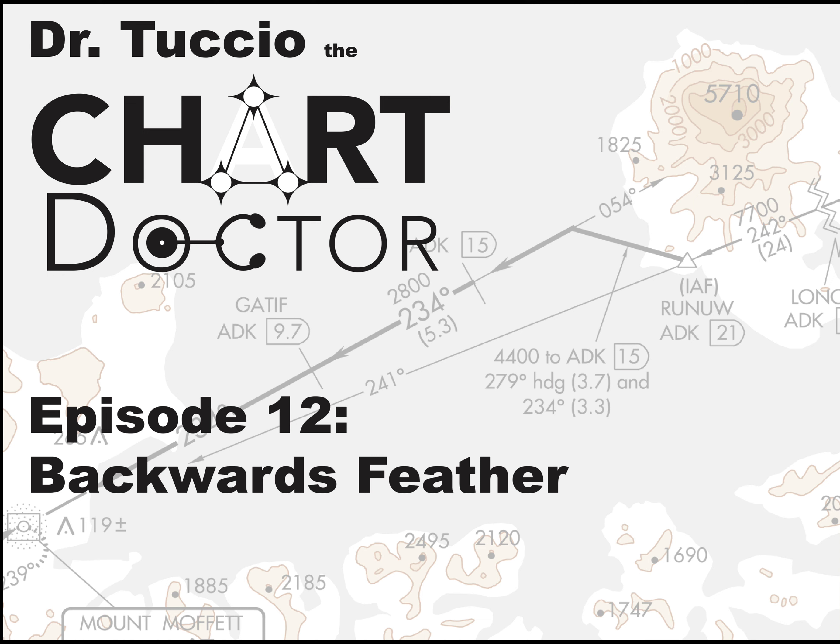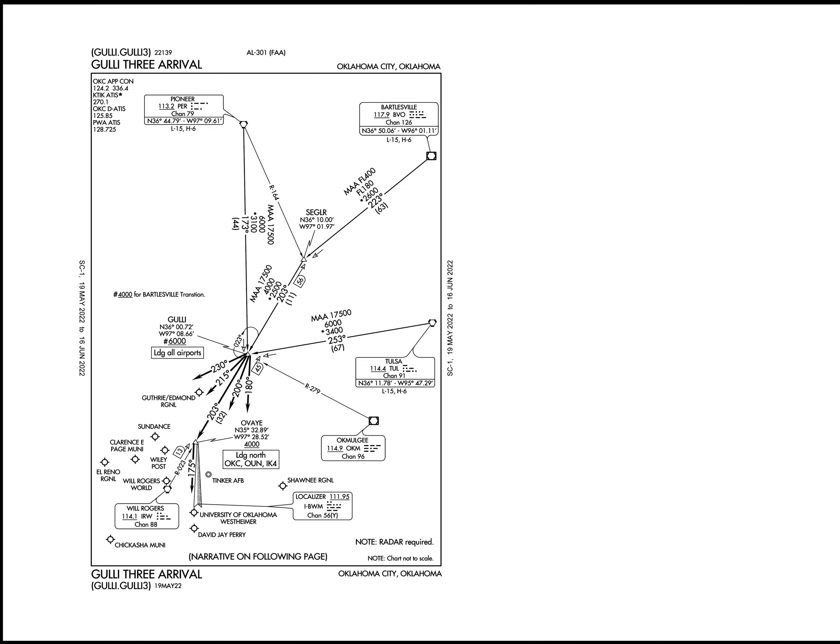Hi, I'm Dr. Tucci of the Chart Doctor, and this is episode 12 where we're going to look at a charting error of a backwards feather on a star. Here is the Gully 3 arrival in Oklahoma City. When you look here you can see that there is a feather depicted for reference on the chart, but look at it sort of going upward to Ove or around Ove.